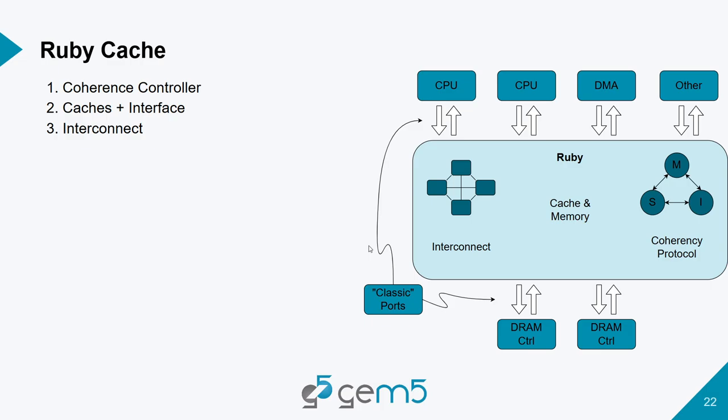Ruby can model meshes, tori, chiplet interconnects, and any coherence protocol you want. There are built-in protocols and you can specify your own bespoke coherence protocol, though that's relatively complicated. We'll cover this in detail on Thursday.